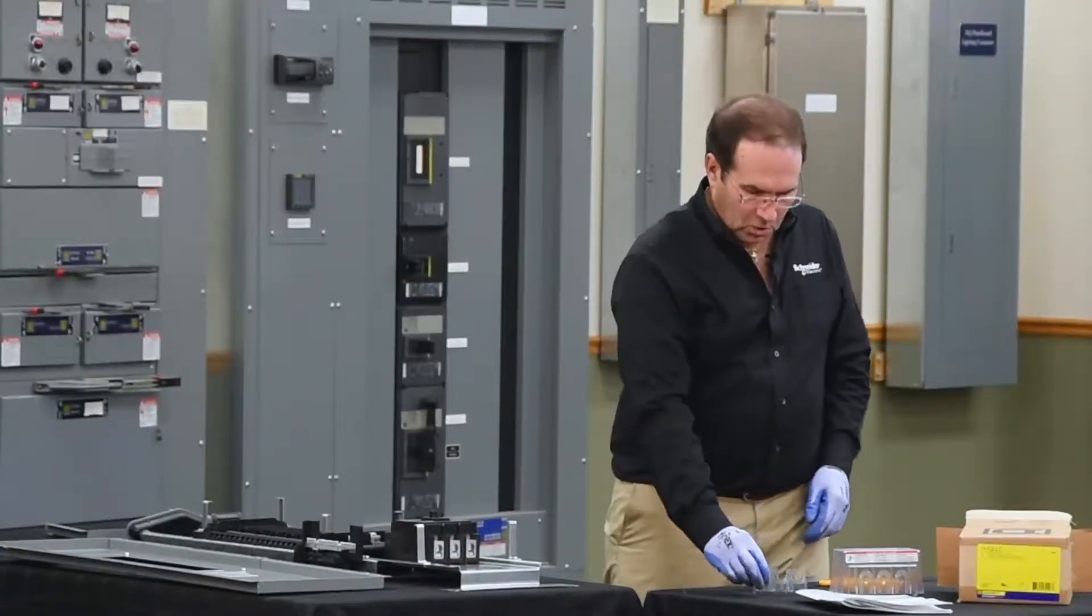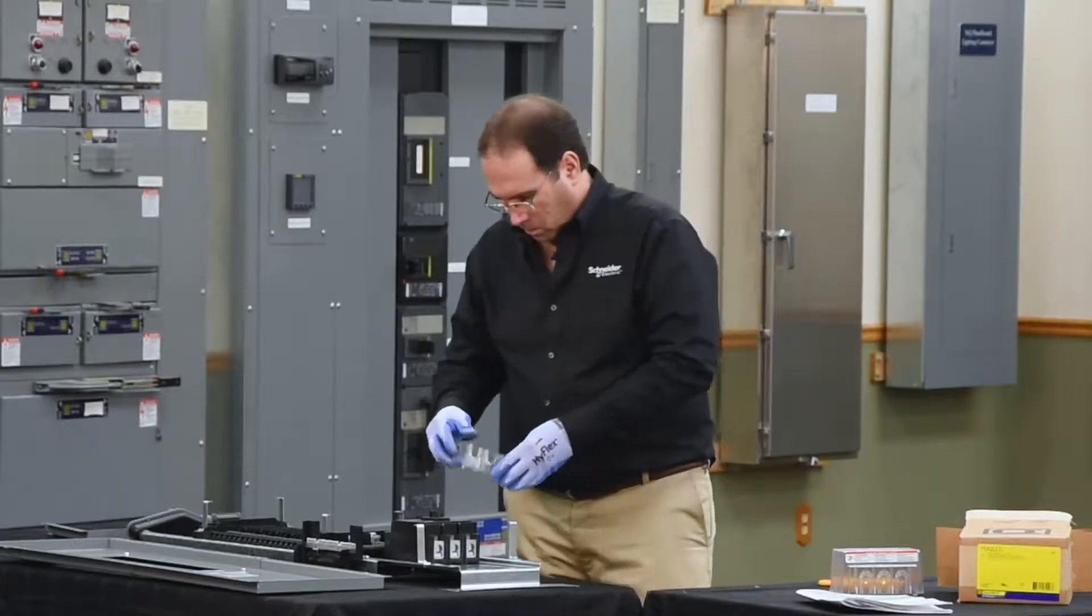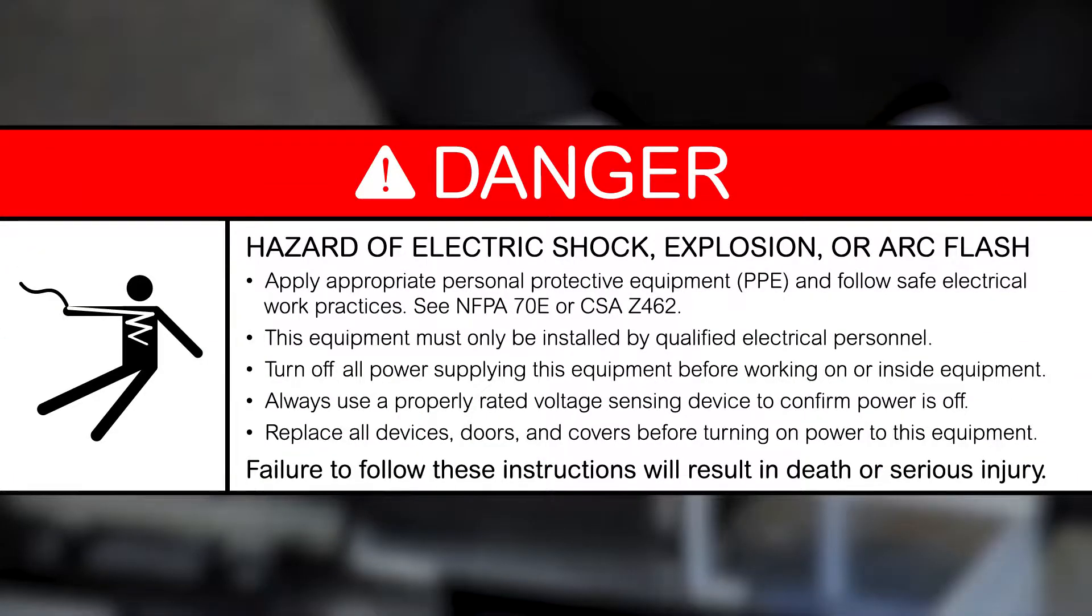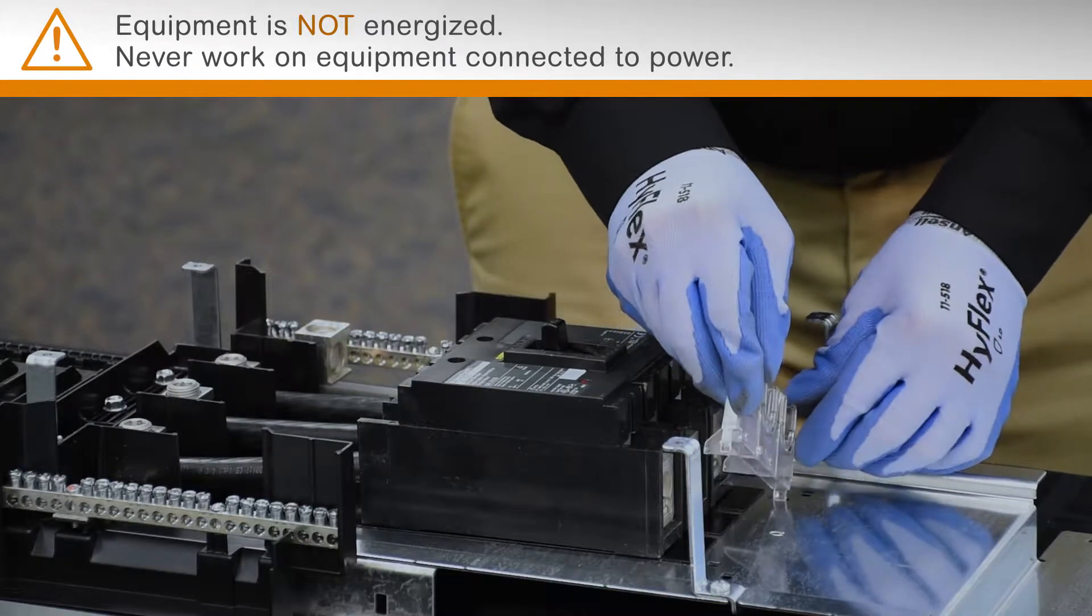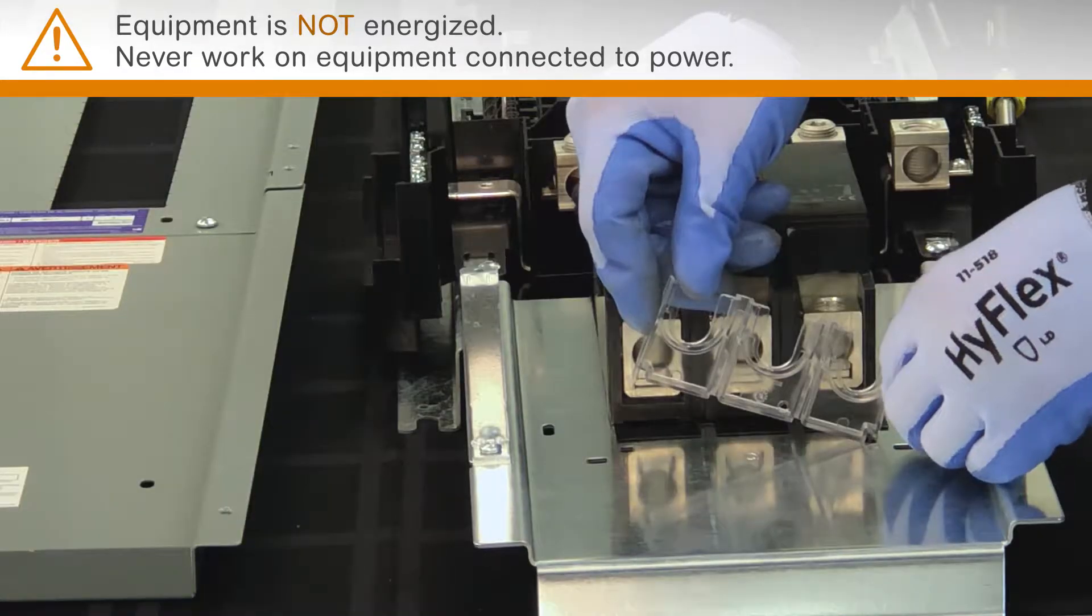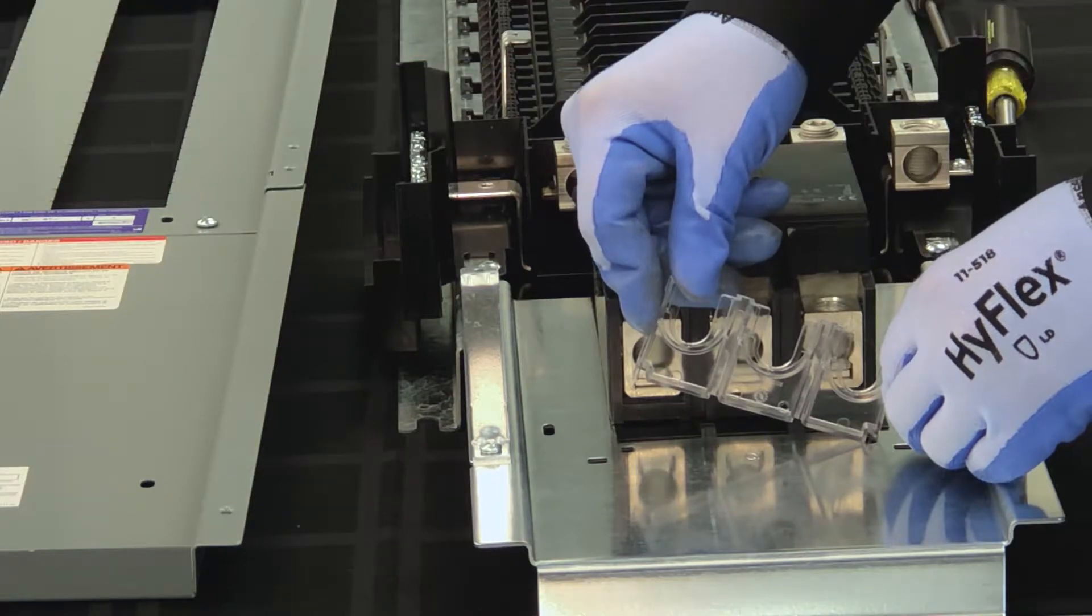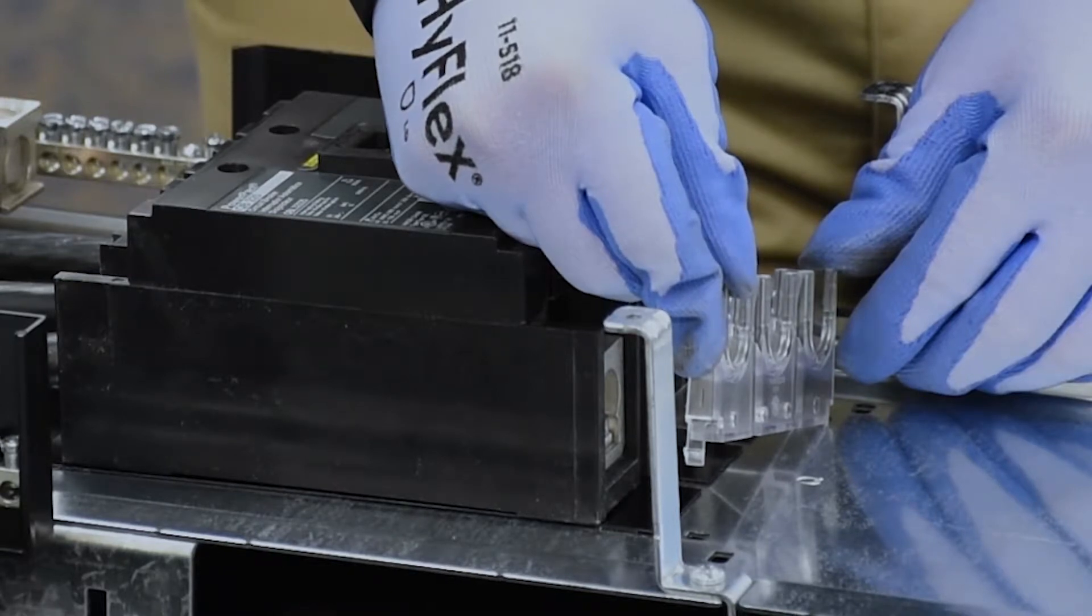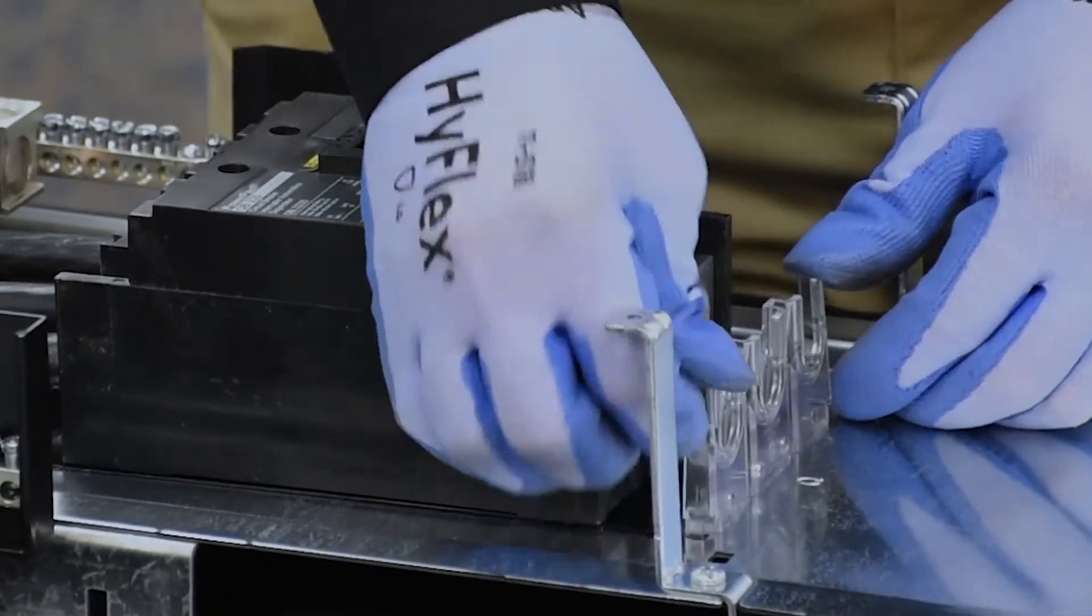The first step is to install the smaller part, which is the bottom part of the barrier. Simply slide one side into the large OB round hole with the tabs that support the barrier facing the breaker. Rotate it down and snap it into place.